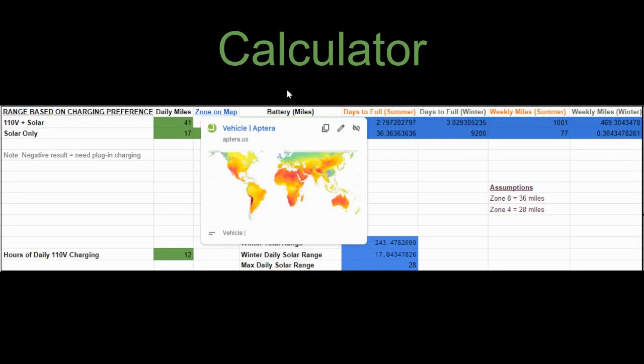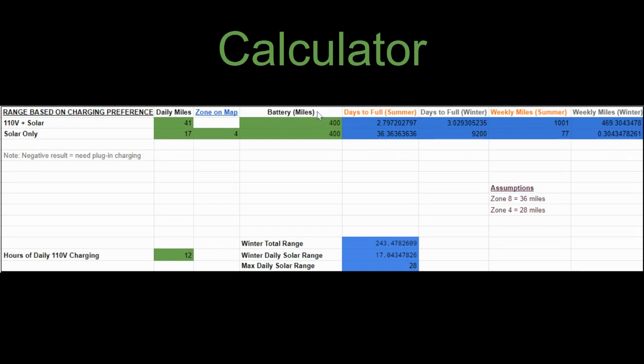You can enter the zone on the map. So highlight this link here and it'll take you to the map on the Aptera website. Find which zone you are and enter that in. And then put in your range model that you are expecting to reserve or purchase. And then the last thing you'll want to enter is the number of hours that you might expect to plug it in per night.